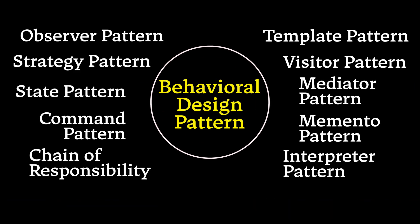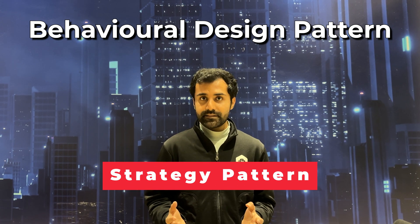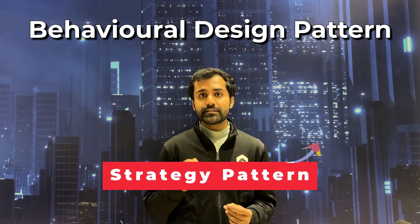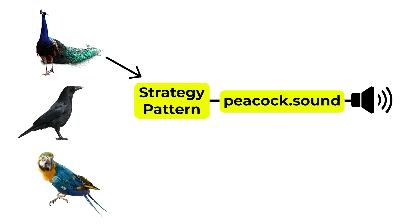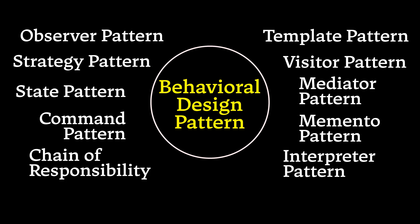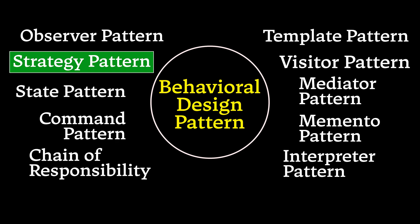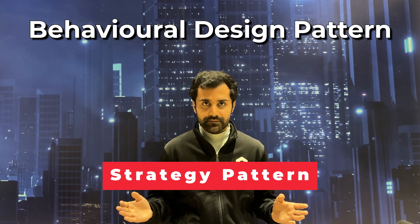The final and most important category is behavioral pattern. For example, strategy pattern. As the name suggests, it allows you to change the strategy or algorithms during runtime, so it allows your code to behave differently under different scenarios. If you just get this pattern right, you will be able to get all the other patterns that fall in the category of behavioral pattern. This is like the mother of all the patterns.